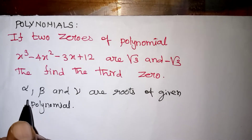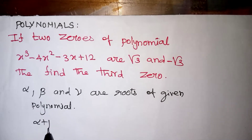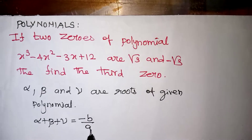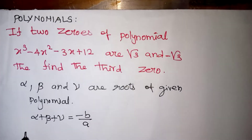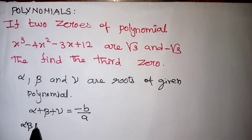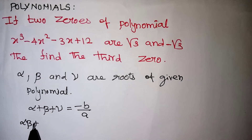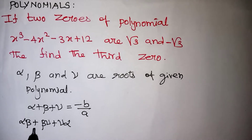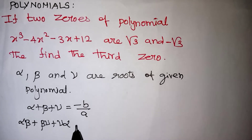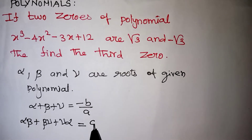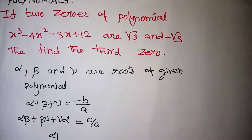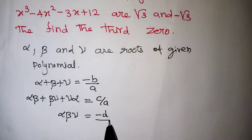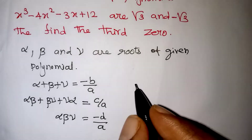The condition is: sum of all the zeros, that is alpha + beta + gamma, equals minus b by a. The next condition — product of sum of two roots taken at a time, that is alpha·beta + beta·gamma + gamma·alpha — equals c by a. Then product of all roots, alpha·beta·gamma, equals minus d by a. These are the three conditions for a cubic polynomial.